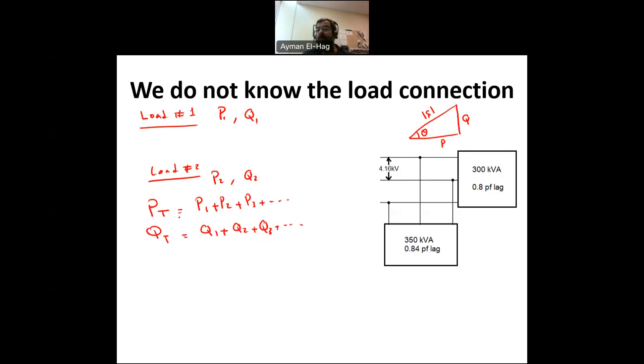Once I know P total and Q total, I can find S total as my complex power, which is Pt plus jQt. And now, once I reach to this level, I can find anything in the question.